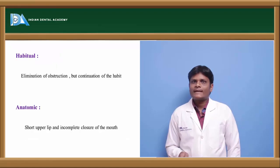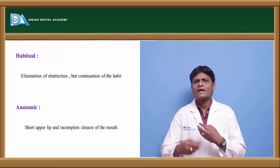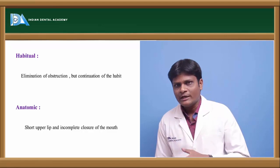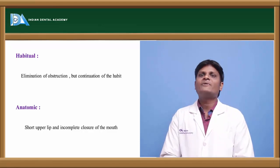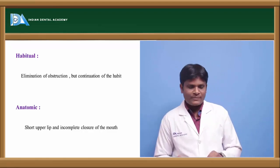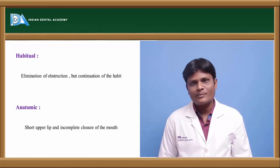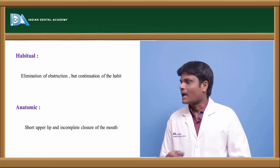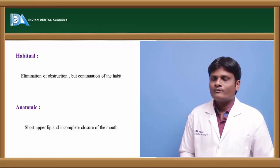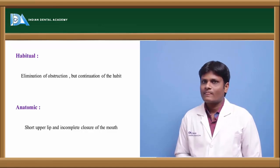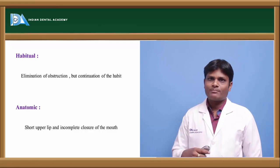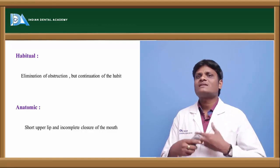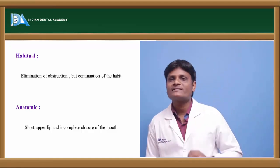Habitual mouth breathing occurs when the habit continues even after elimination of nasal obstruction. Anatomic mouth breathing results from a short upper lip that prevents complete mouth closure, leading to constant oral breathing. Whatever the etiology — anatomic, habitual, or obstructive — the clinical features are similar.